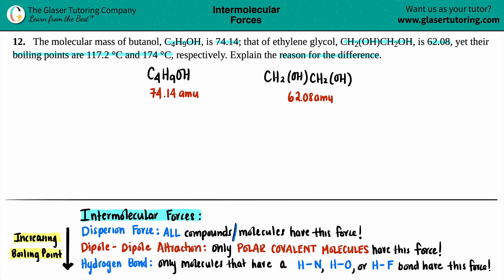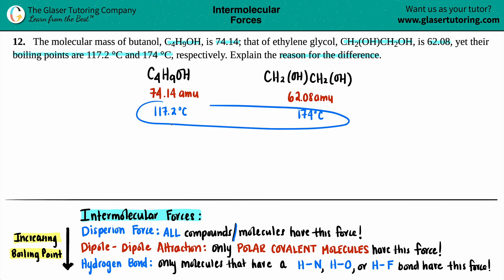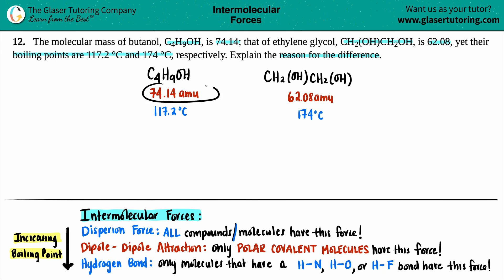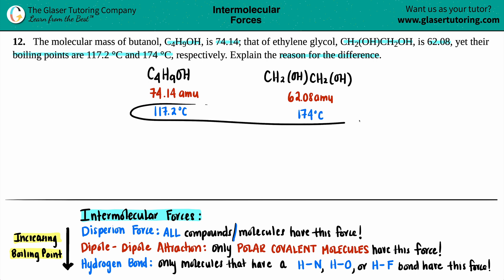Now when we go to their boiling points, they said that butanol has 117.2 degrees Celsius and ethylene glycol has 174 degrees Celsius. Generally speaking, the higher the molecular mass, the higher the boiling point. But there seems to be an issue here — butanol has more mass but the lower boiling point. What is going on with this difference?